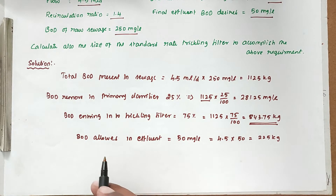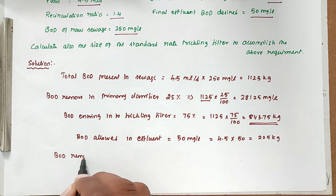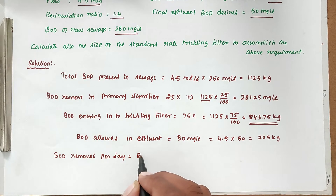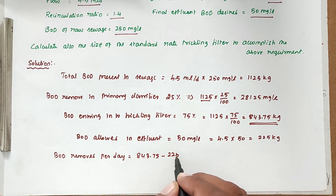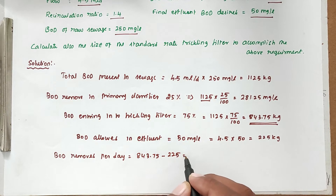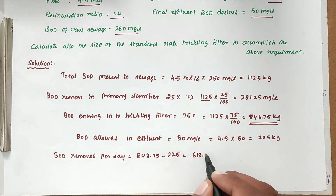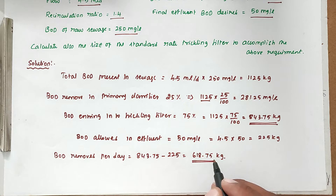BOD removed per day equals 843.75 minus 225, which gives 618.75 kg. So 618.75 kg of BOD is removed in the high rate trickling filter per day.